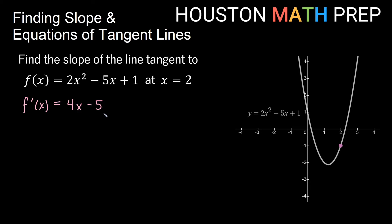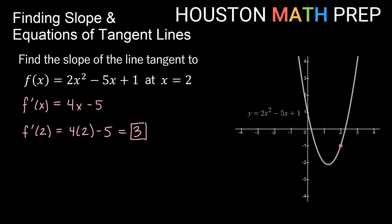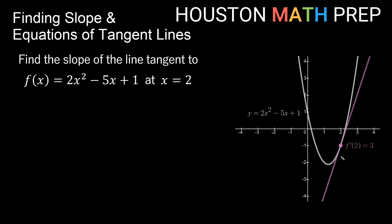Remember, that's the formula for all the slopes everywhere on this original function. If I want to find the slope at x = 2, I plug in 2. So f'(2) = 4 times 2 minus 5, which is 8 minus 5. The slope on this function at that point is 3. Looking at a picture of that, you can see through this point we have a slope of positive 3.